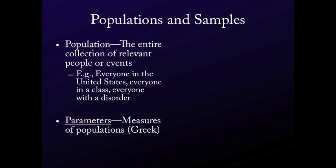Parameters are measures of populations. I have 'Greek' in parentheses there because parameters are usually represented with Greek variables. So if you see a variable in Greek, it's a parameter — it's representing something about a population. If you see it in the Roman alphabet, it's representing a sample. That's one way to help distinguish and keep them straight, and that's standard throughout the field. There's not a lot of standard notation in statistics, but this is one thing that's fairly standard.